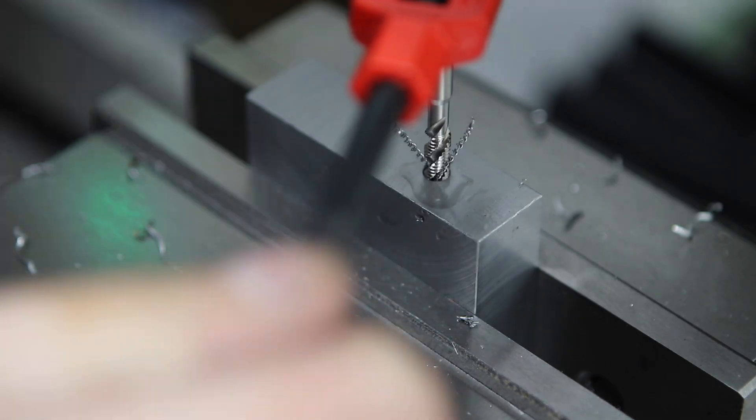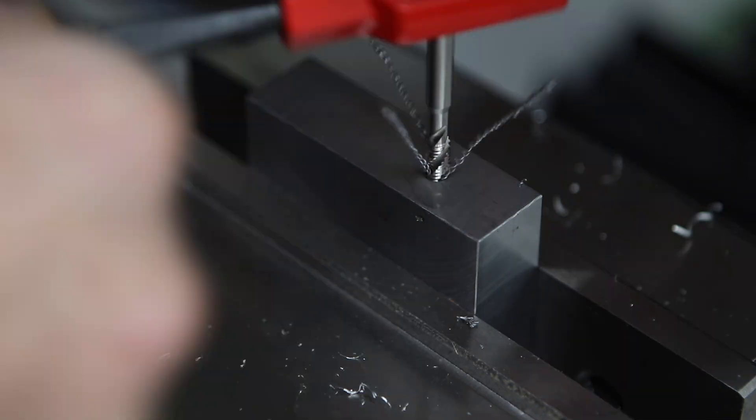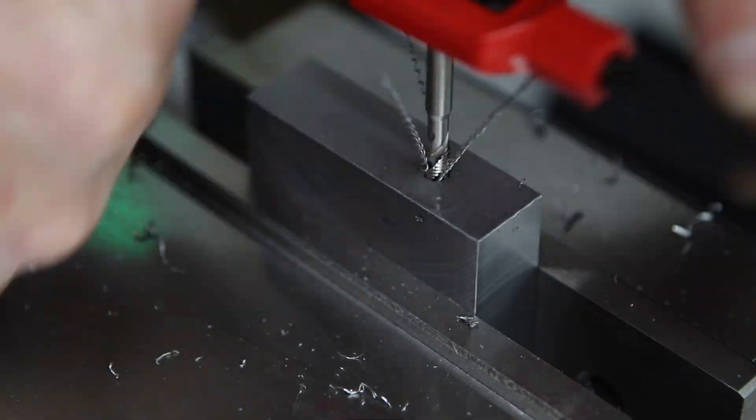The reason I'm doing that is because I don't want to break the tap in the hole. The nice thing about these spiral flute taps by the way is that they force the chips out of the back of the hole as you can see, which when tapping a blind hole like this is really nice because you don't get the chips packing up in the bottom of the hole.